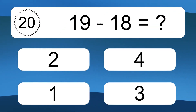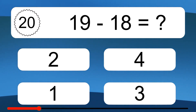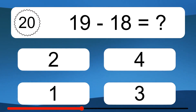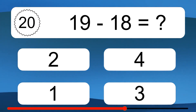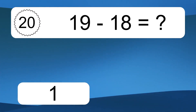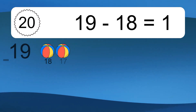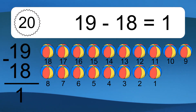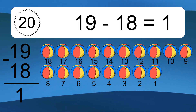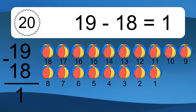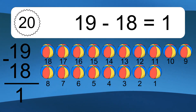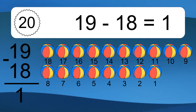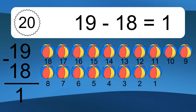19 minus 18 equals what? 19 minus 18 equals 1. Let's count it: 18, 17, 16, 15, 14, 13, 12, 11, 10, 9, 8, 7, 6, 5, 4, 3, 2, 1.